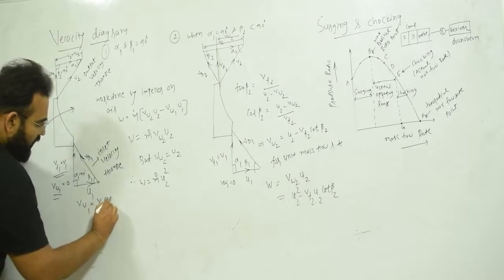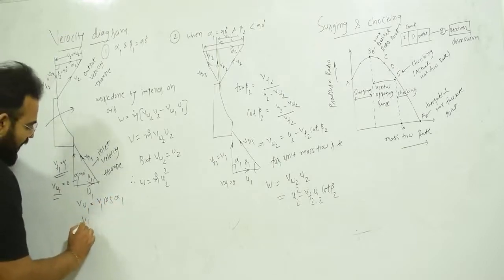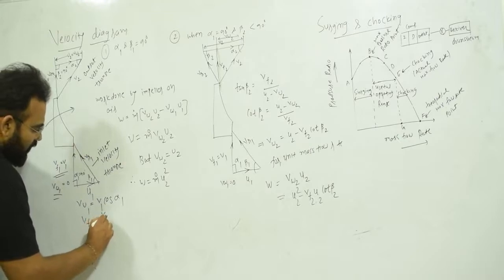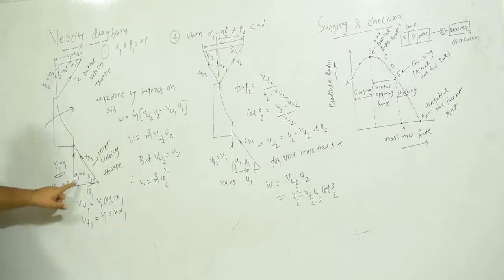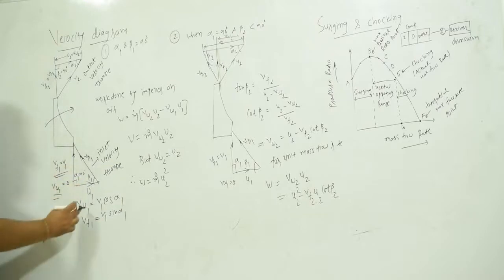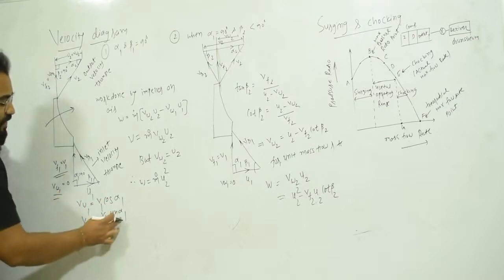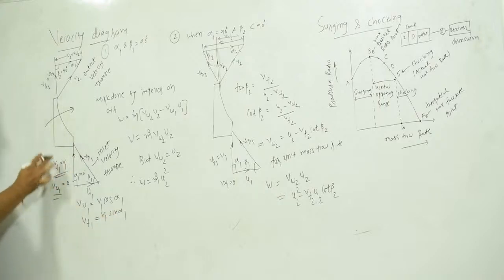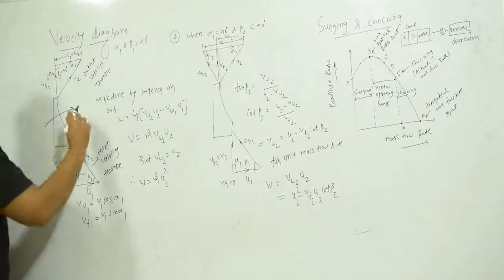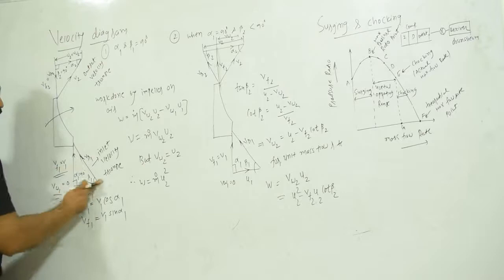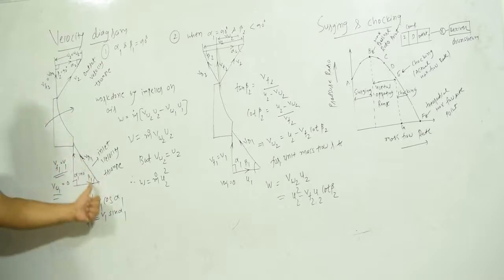We have: vw1 equals v1·cos(alpha1), and vf1 equals v1·sin(alpha1). Here alpha1 is the angle between v1 and u1. Since the fluid enters axially, alpha1 equals 90°. Therefore vw1 equals v1·cos(90°) equals 0, and vf1 equals v1·sin(90°) equals v1. So the whirl velocity at inlet is zero.